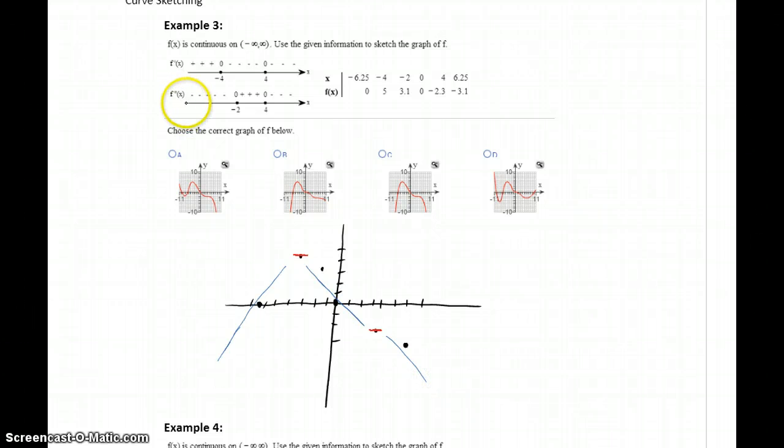So then we want to look at the second derivative to look at the shape of our graph, the concavity. So from negative infinity to negative 2, our function is concave down. So we have a function that's increasing, levels out, changes to decreasing, and is concave down that entire time. So we have that downward facing curve.